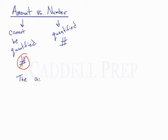The amount of rain we had was ridiculous. You can't count rain. Like you can't have three rain or five rain, so in that case we use amount.